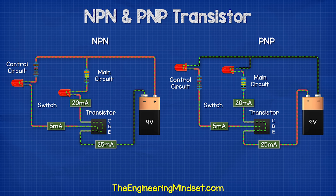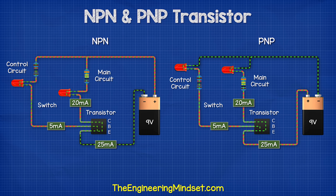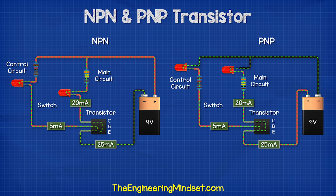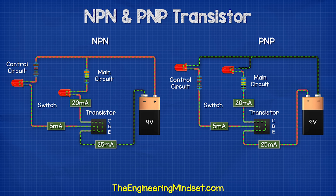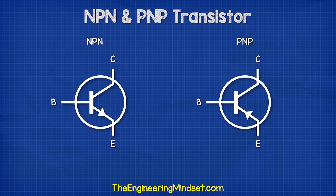I'll place these side by side so you can see how they compare. Transistors are shown on electrical drawings with symbols like these. The arrow is placed on the emitter and points in the direction of conventional current, so that we know how to connect them into our circuits.